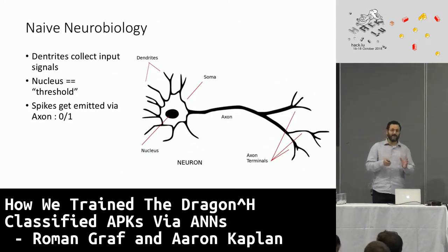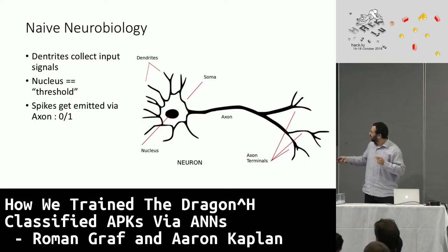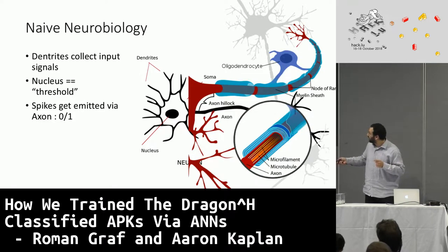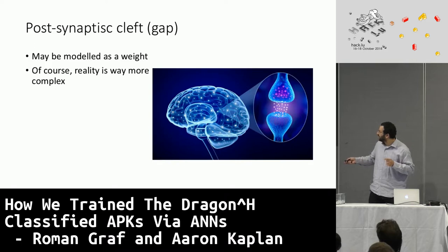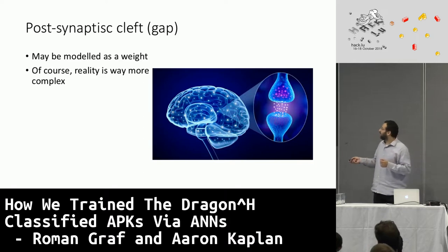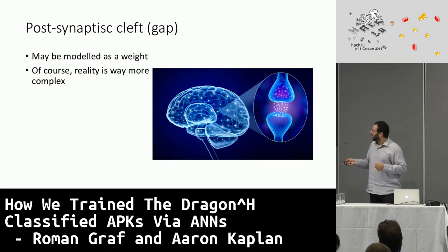Brief recap of neuroscience, which was already presented at this conference. We have the cell, the nucleus of the brain cell, the axon as basically the output, and inputs here. The most important thing for our model is the post-synaptic gap or cleft, where chemicals are passed on. We can model these as weights — some are inhibitive and some enhance the signal.